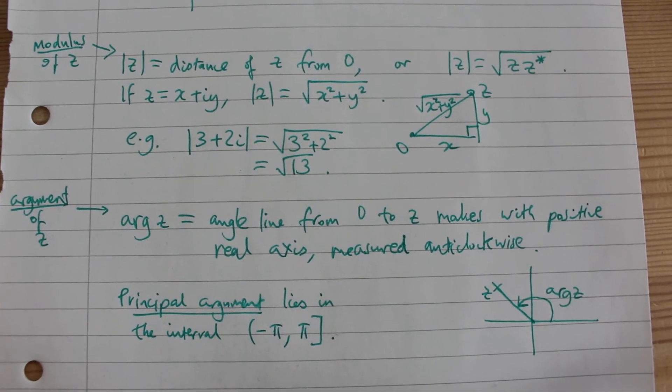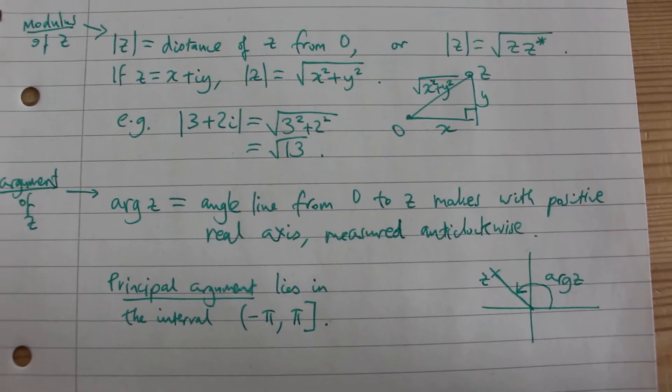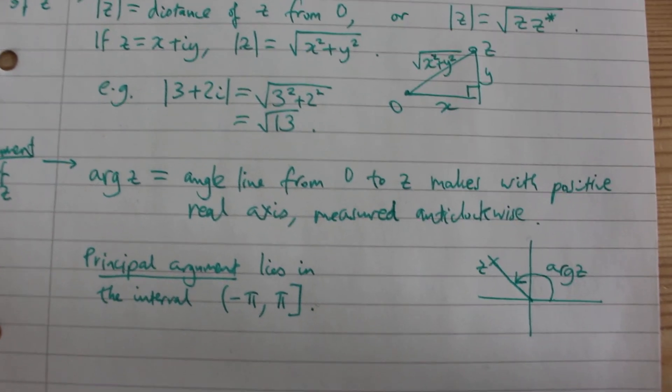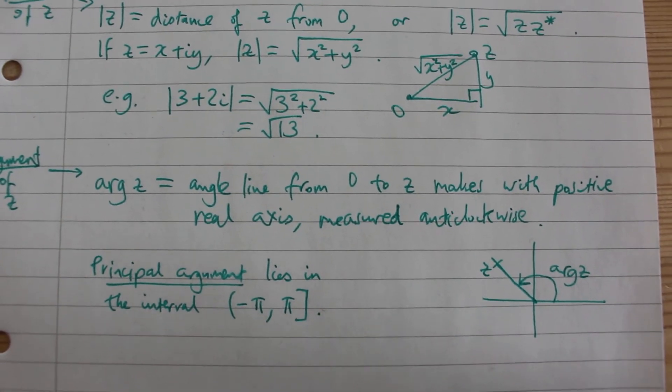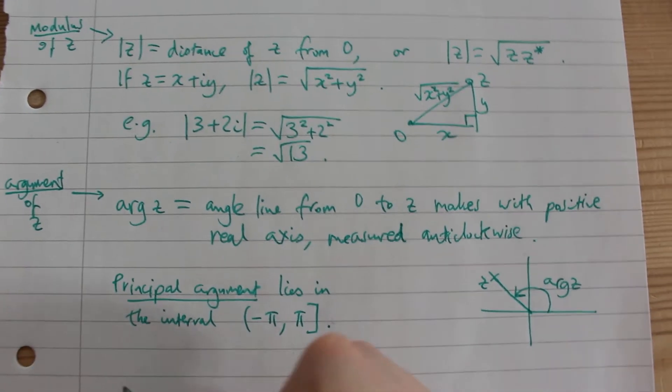The principal argument is the argument that lies in the interval from minus pi to pi. So if we're working in radians. Obviously there are a lot of different possible values the argument can take.